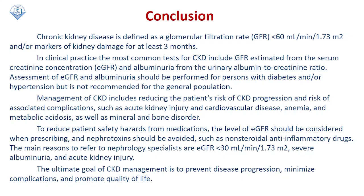To conclude: chronic kidney disease is a glomerular disease with decreased glomerular filtration rate below 60, with markers of kidney damage present for at least three months. There are specific formulas for checking the GFR and albumin levels. Important signs include hypertension and edema as early signs, whereas uremic symptoms are late signs.